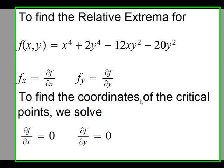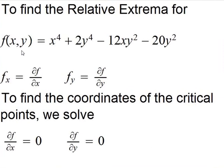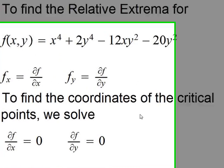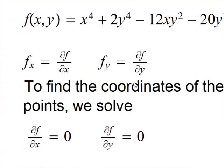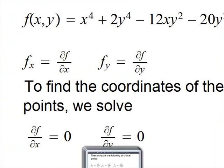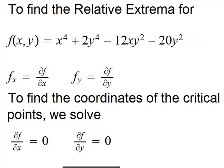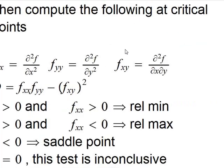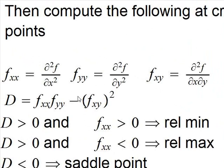We are going to use MATLAB to obtain the relative maxima of this function. Recall that an analytical method for determining critical points is to compute the partial derivatives and set the two partials equal to zero. After that, when you get the solutions — they are critical points — then compute the values of the second derivatives and obtain the discriminant d.